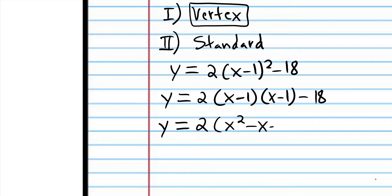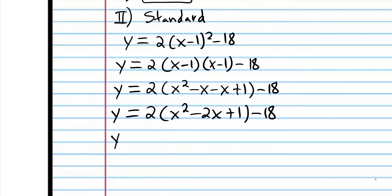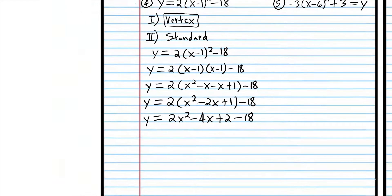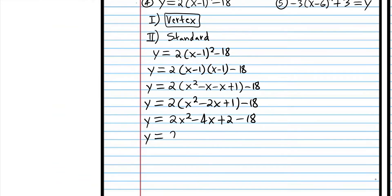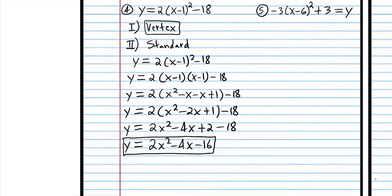Then we can simplify and use the distributive property. Combining the last terms: 2 minus 18 is negative 16. So there you go — we converted to standard form. If you got that answer, good job.